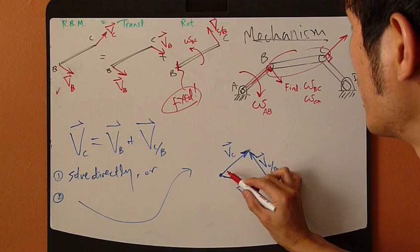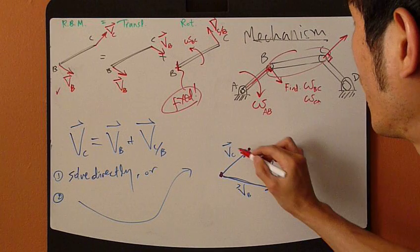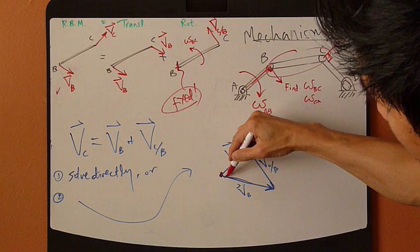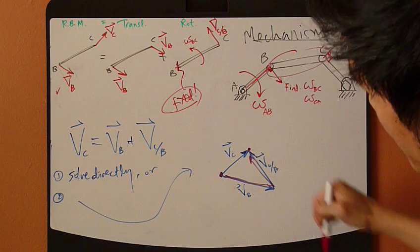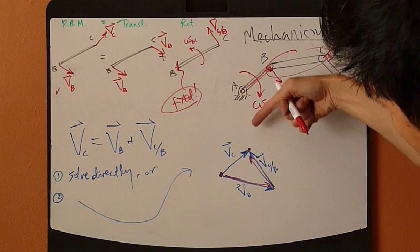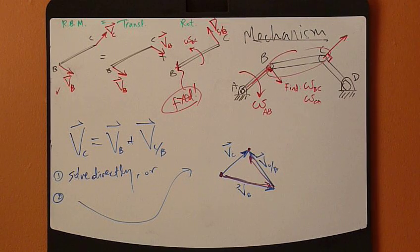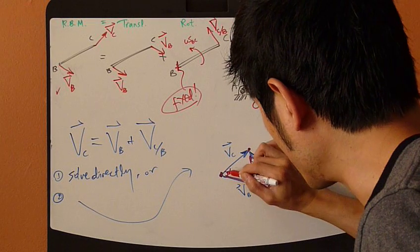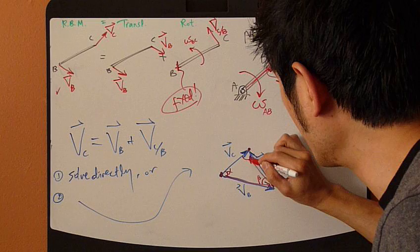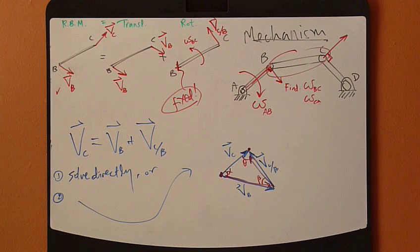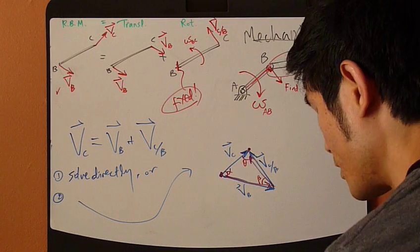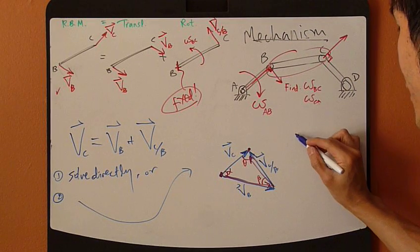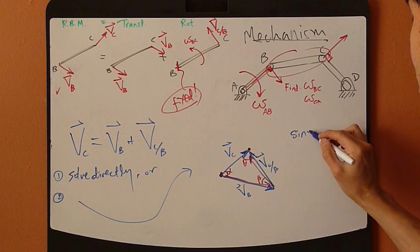This one's a closed vector loop. So this means that from here to here, following this VC route is the same as following this second route - VB plus VC/B. Now they establish this vector loop. I can call this alpha angle, beta angle, and then theta angle. So by using the property of a triangle, I can actually use the sine rule.